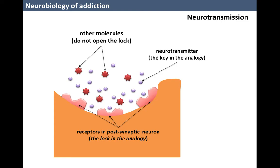The presynaptic neurons send messages that, depending on the neurotransmitter released and the functions of the neurons involved, may stimulate or inhibit the postsynaptic neuron. The outcome is determined by the sum of the many stimuli that are received.